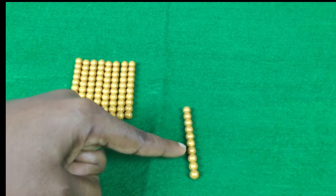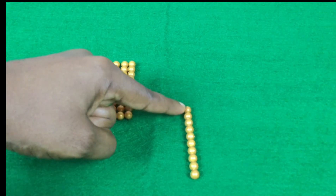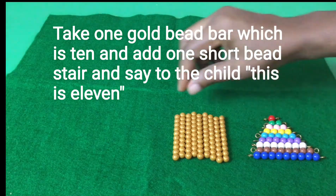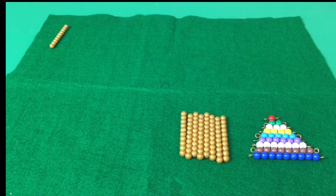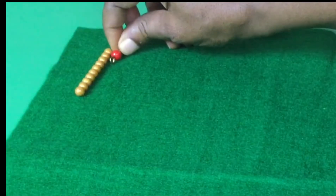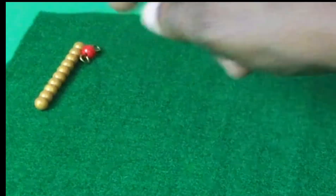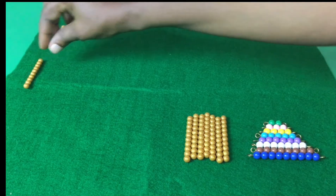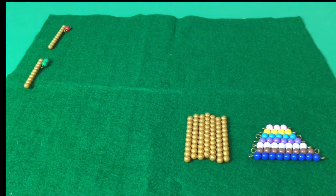One, two, three, four, five, six, seven, eight, nine, ten. Take one gold bead bar which is 10, and add one short bead, and say to the child, 'This is 11.' Ten and one make 11. Ten and two make 12.